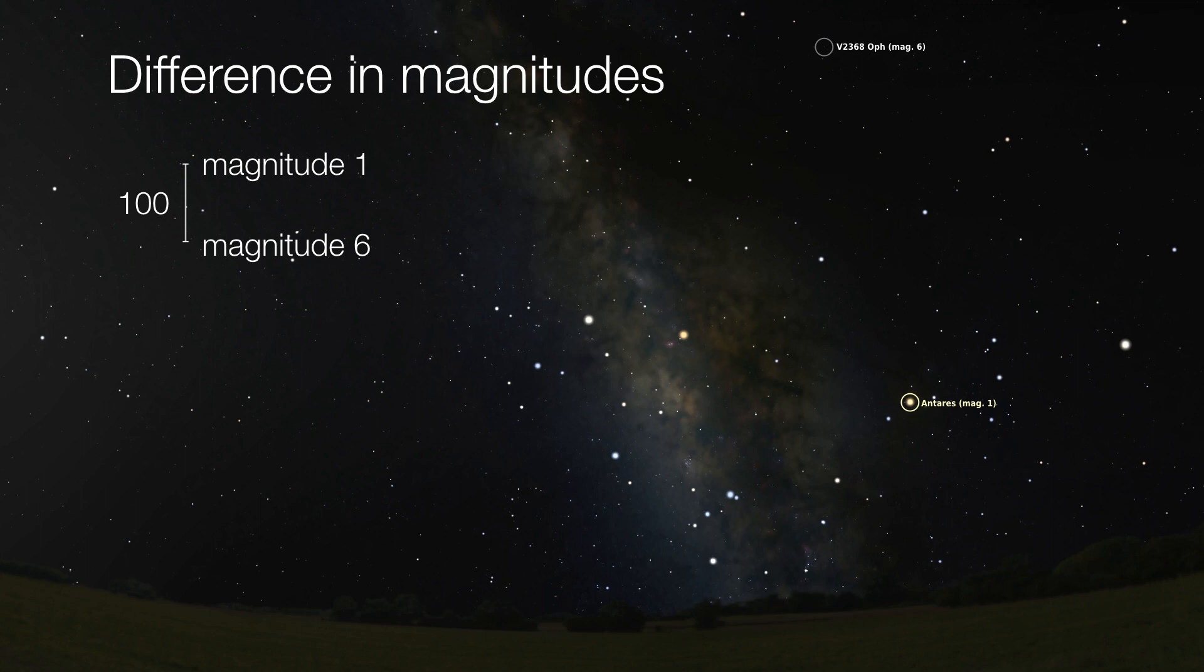Well, it turns out there is a factor of 100 in brightness between a magnitude one star and a magnitude six star. So here we have two stars circled. We have Antares at about magnitude one, and V2368 Ophiuchus at magnitude six, so right at the limit of human detection. In fact, you may not even be able to see it on your screen. It's so faint. So these two stars differ by about a factor of 100.